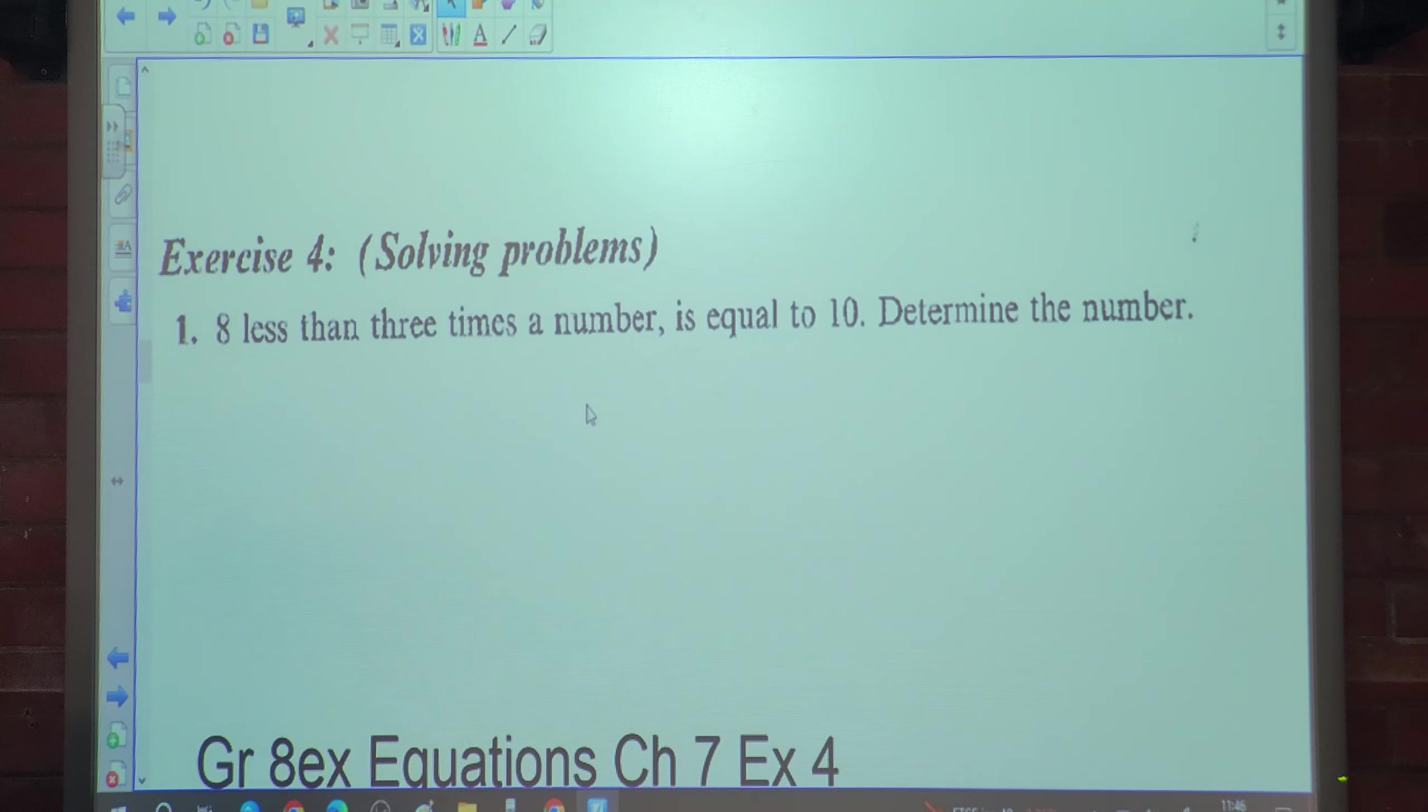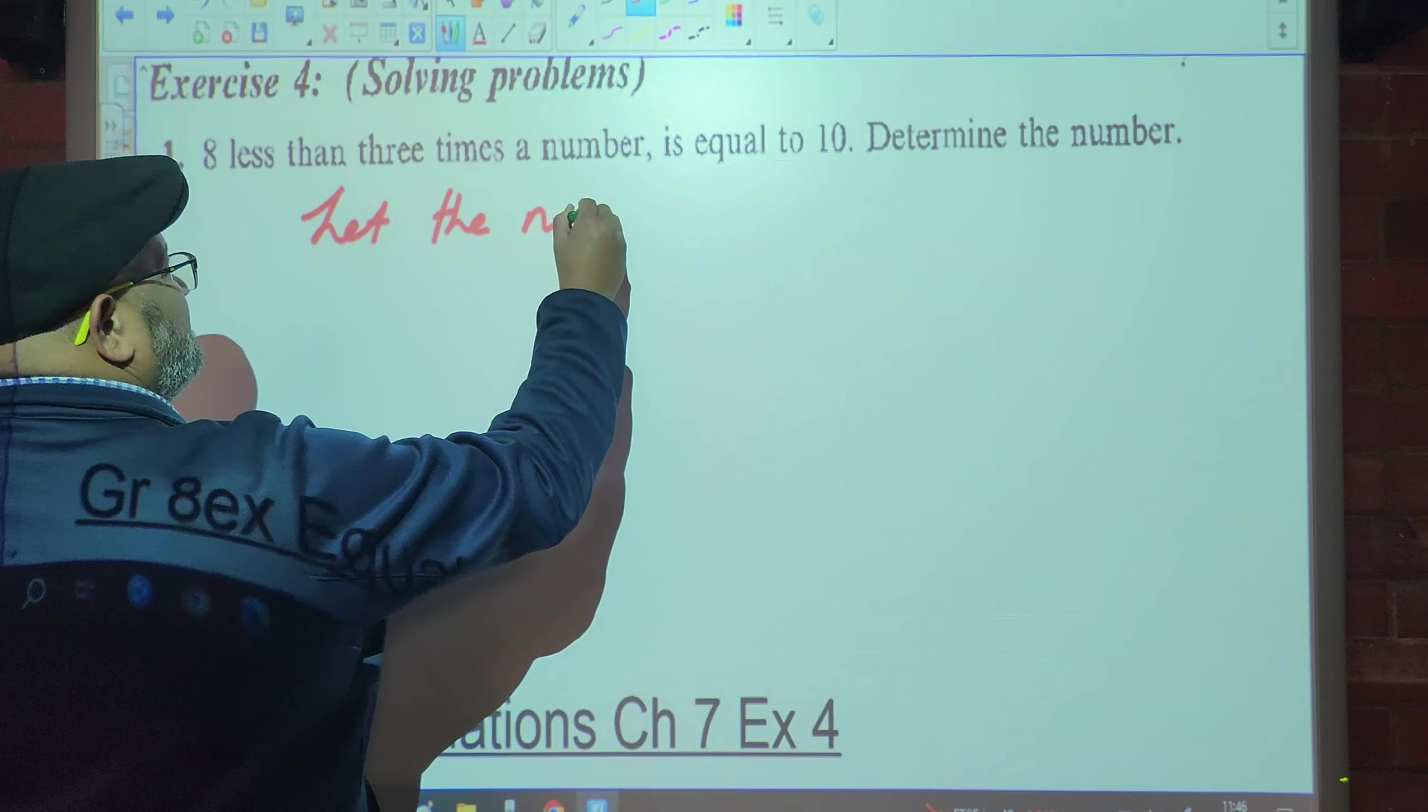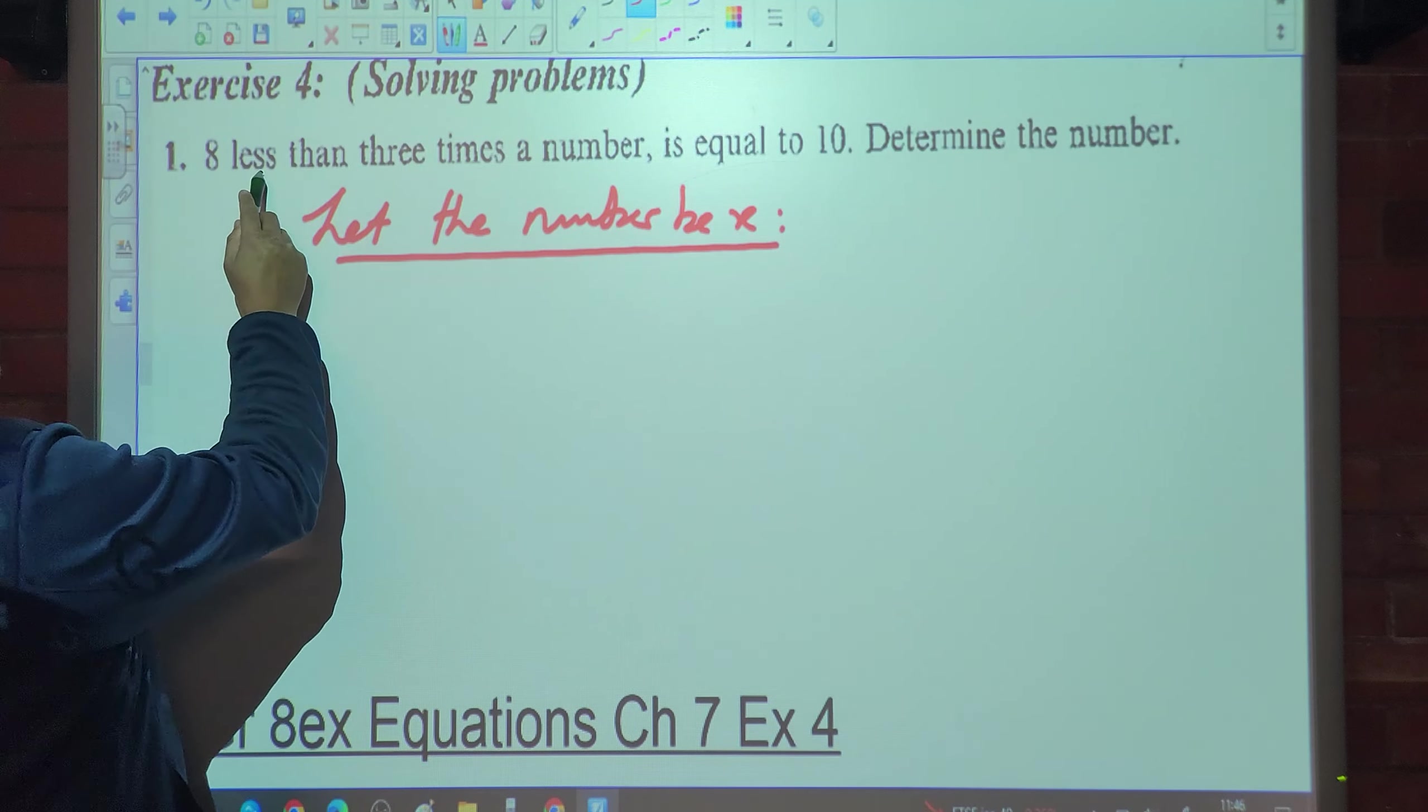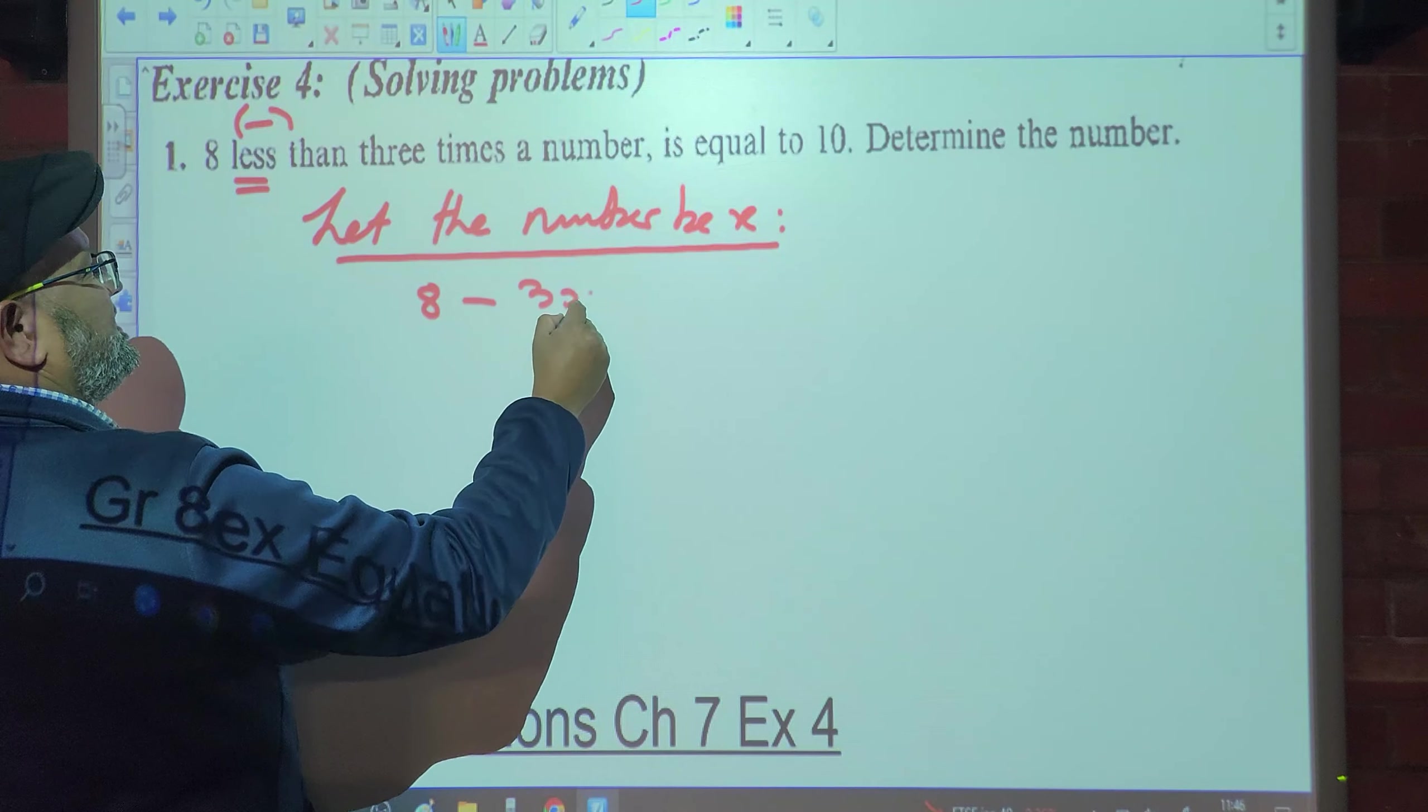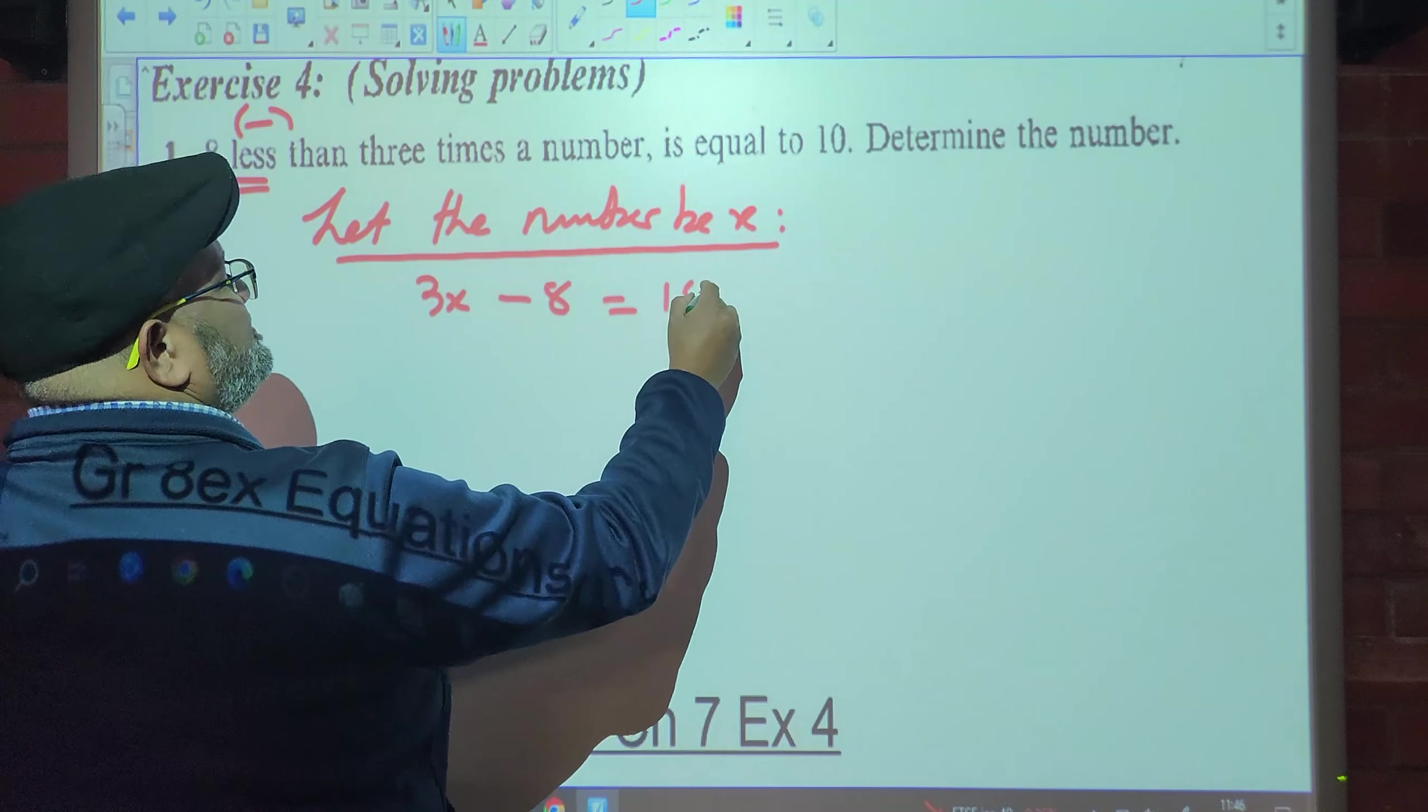For number one, solving problems: 8 less than 3 times a number. Where do we start? We say let the number be x. So 8 less than 3 times a number. 8 less, I will subtract 3 times a number. 8 less the other way. 8 less than 3 times a number is equal to 10.